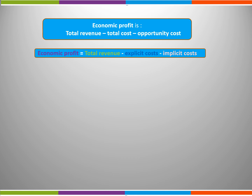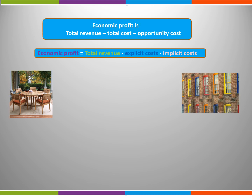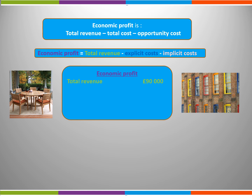Imagine the firm selling wooden furniture decided to change the use of its factors of production. Instead of making wooden furniture, it moves into the growing market for bespoke window frames. There is an opportunity cost of £20,000 — the profit that the firm gave up from making wooden furniture. The move is a success and it makes total revenue of £90,000 with explicit or total costs of £65,000. The firm made an accounting profit of £25,000 and an economic profit of £5,000.